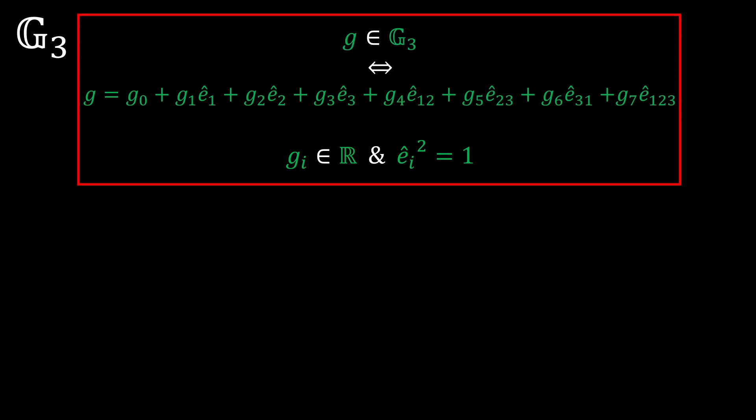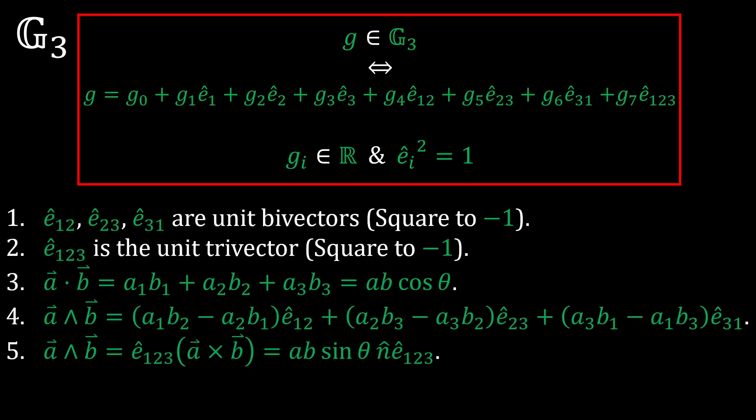Let's now consider g3, where we introduce three orthogonal unit vectors which square to positive 1. Now the unit vectors generate three new bivectors and also a trivector. All the bivectors square to negative 1, and so does the trivector.